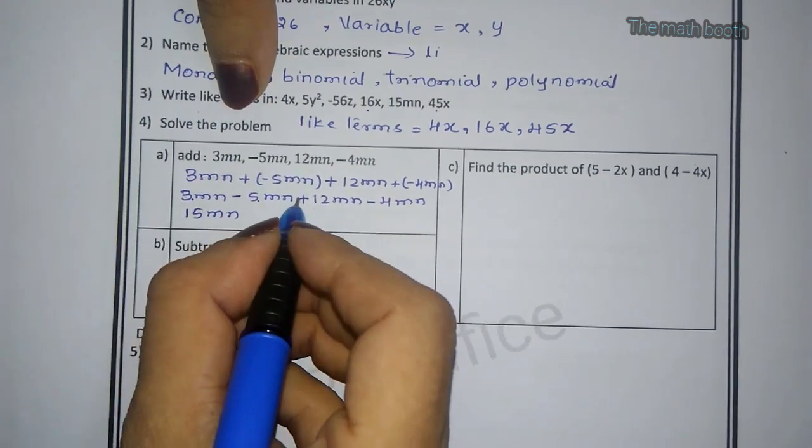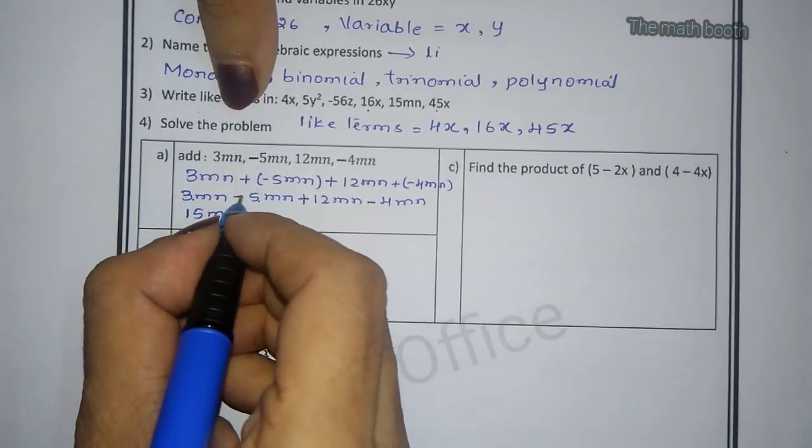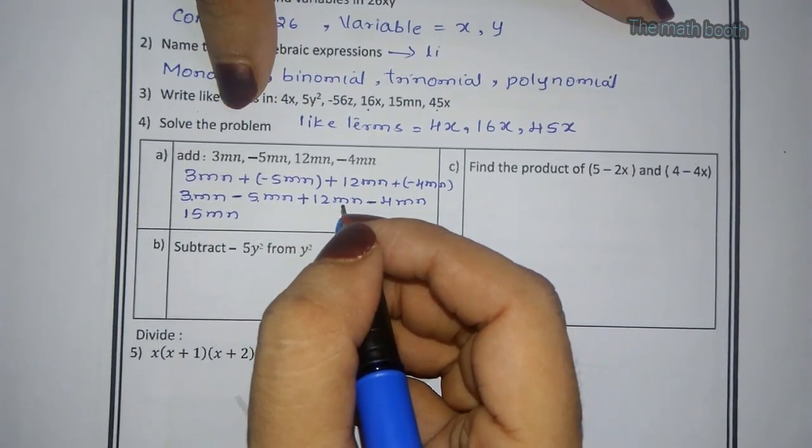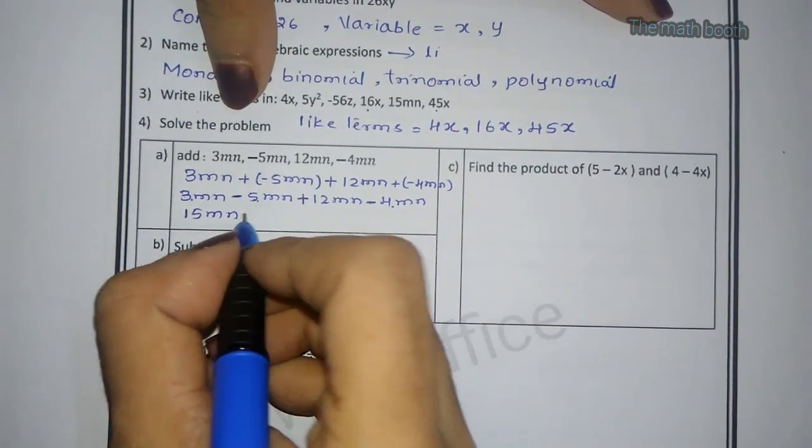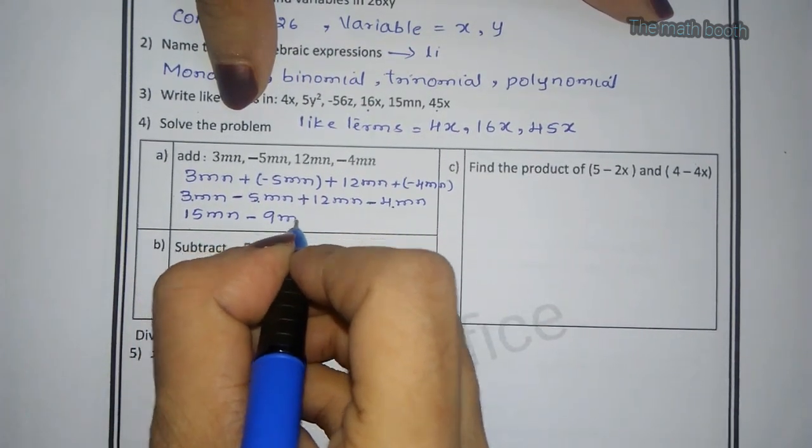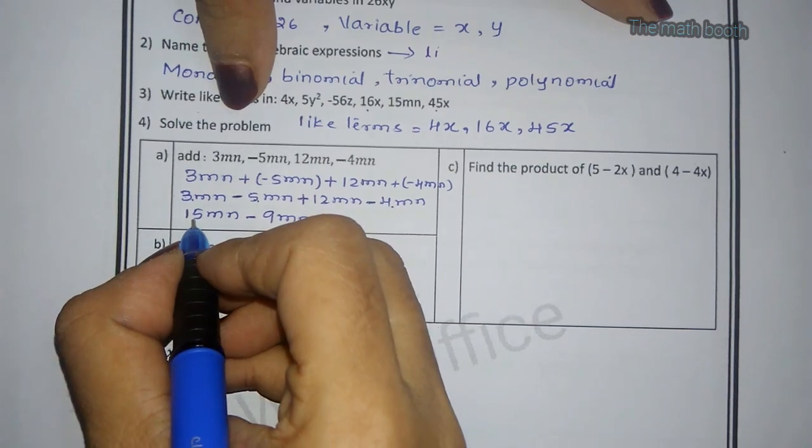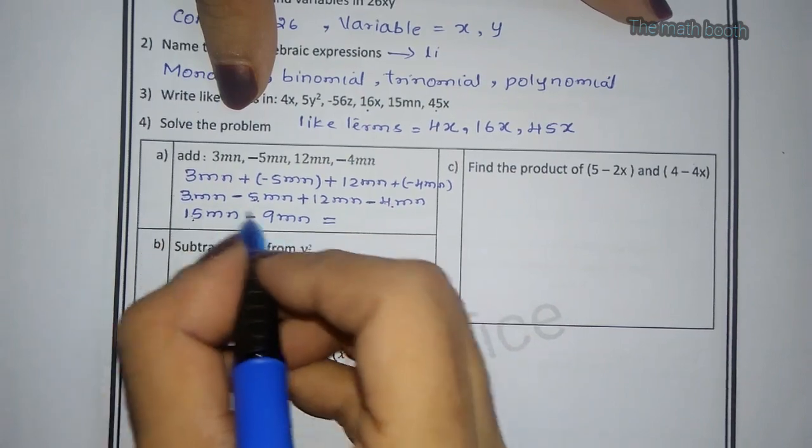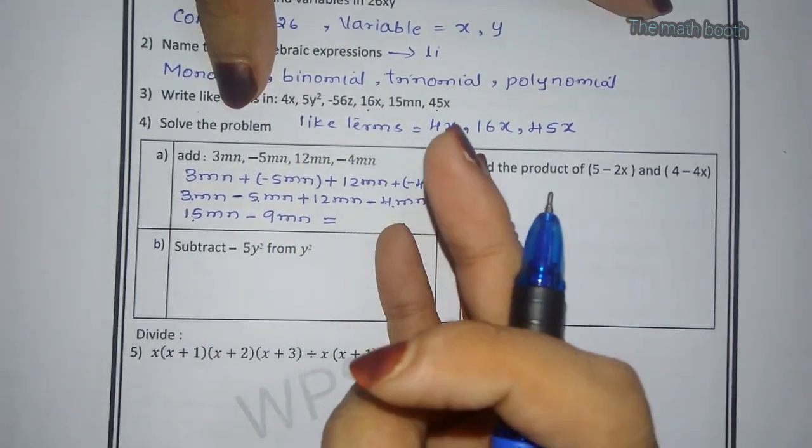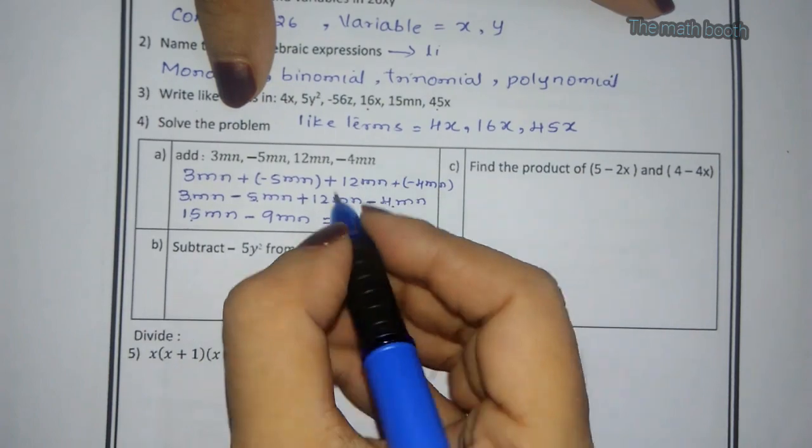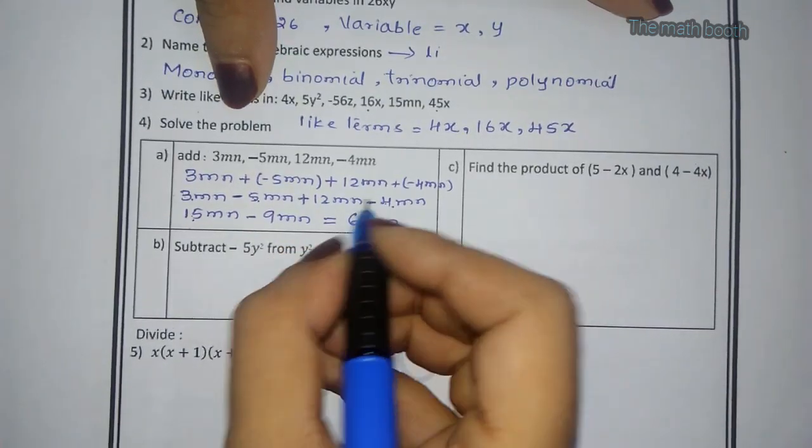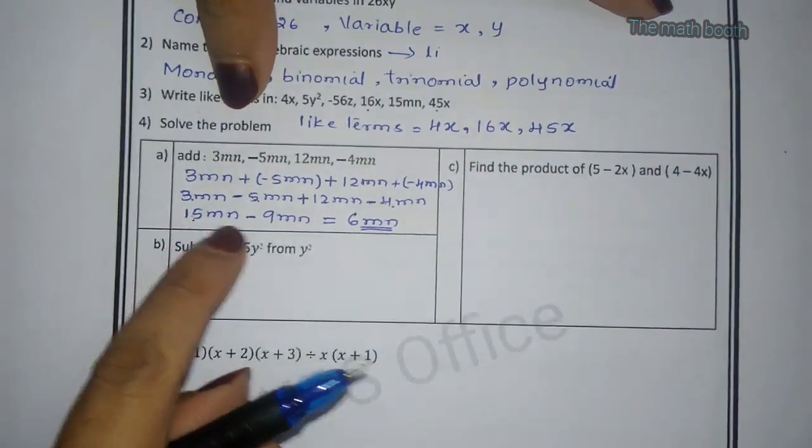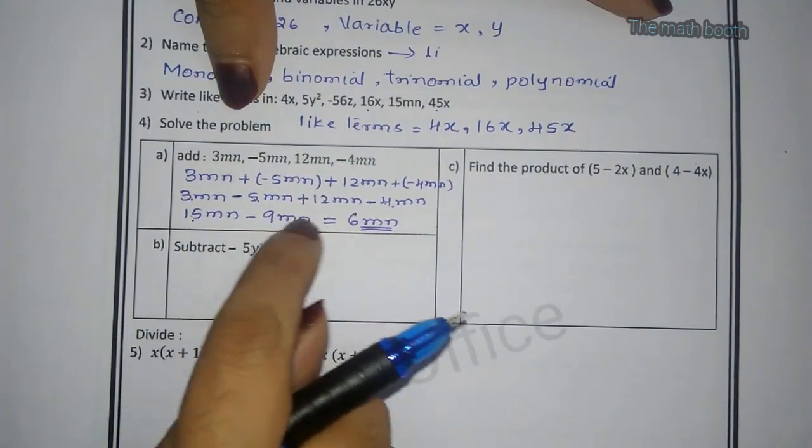Both sign have plus, so plus and plus we will add. Now minus sign and minus sign also we will add. We know minus minus is plus, but sign will be minus. 5 plus 4mn is minus 9mn. Now plus minus is minus. 15 minus 9: 10, 11, 12, 13, 14, 15 is 6. So 6mn is the answer. 15mn minus 9mn, they are like terms so we can add or subtract. If you would have unlike terms we cannot.